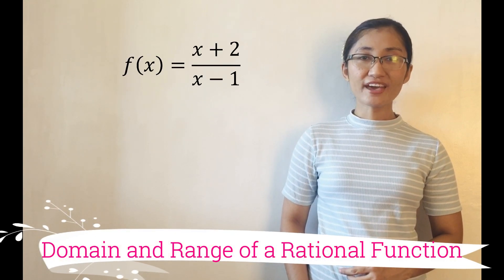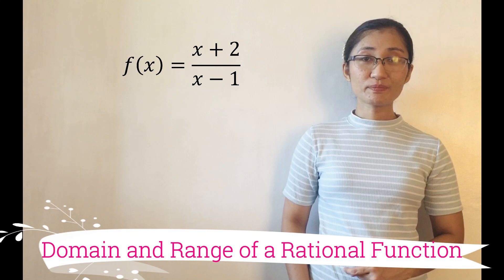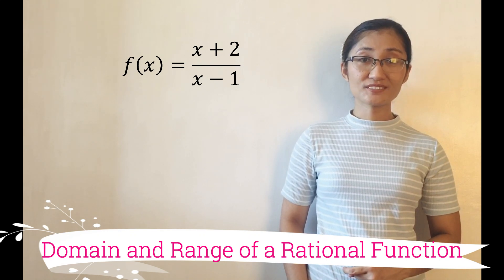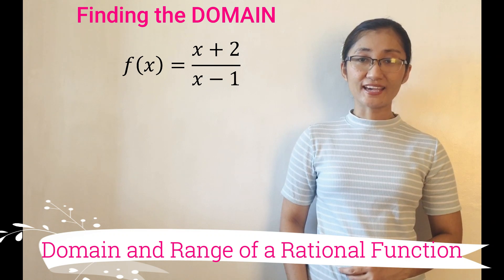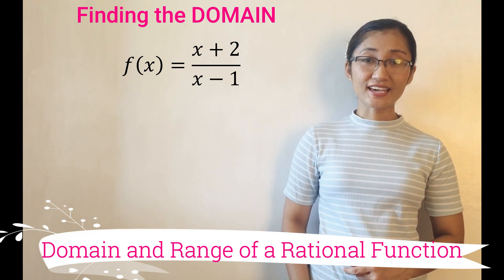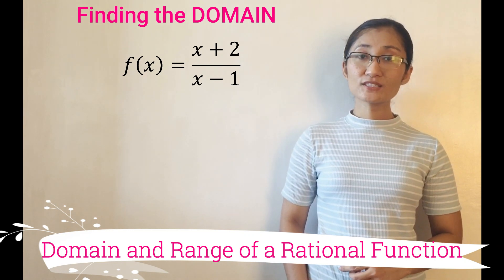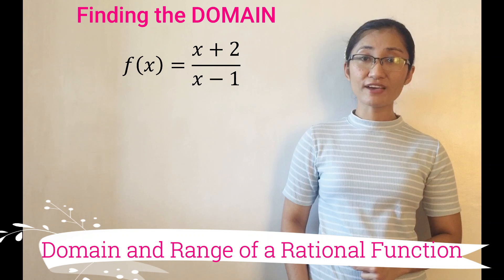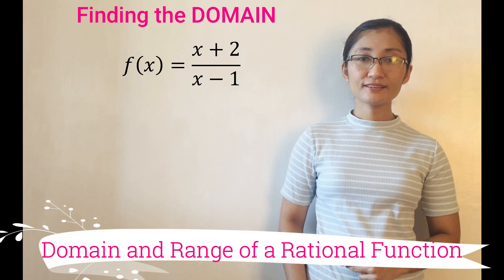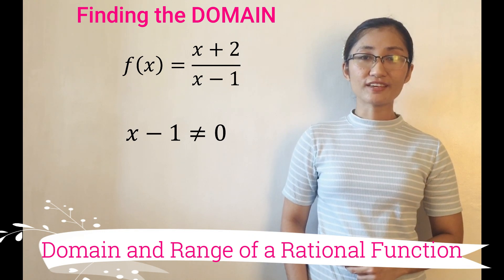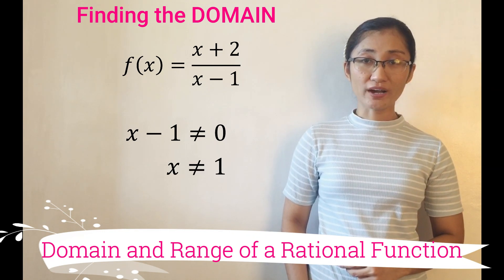Determine the domain and range of f(x) = (x+2)/(x−1). Let us determine first the domain. Notice that there is x in the denominator. Since every denominator cannot be equal to 0, the presence of x in the denominator will affect the domain. That is, denominator x minus 1 cannot be equal to 0. By solving, x is not equal to 1.